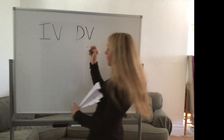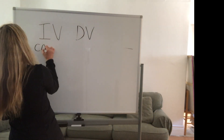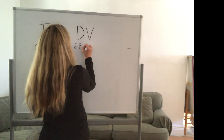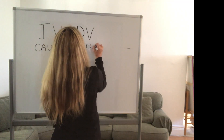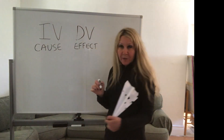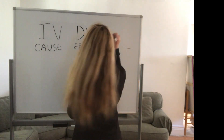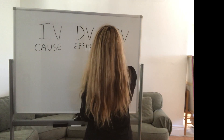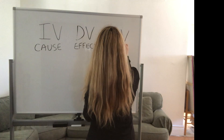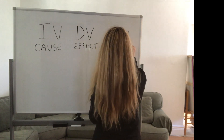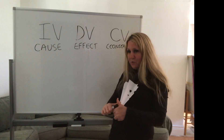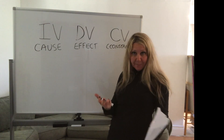You also have another type of variable called a controlled variable, or sometimes called a constant, since it really shouldn't vary. A controlled variable or constant is something that should be kept the same in the experiment.